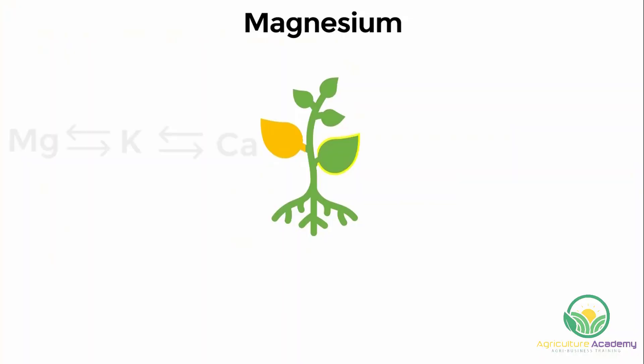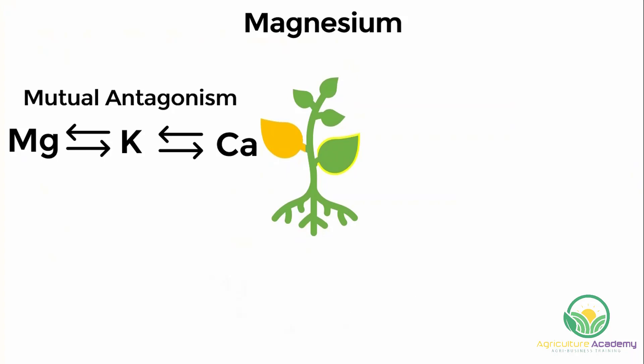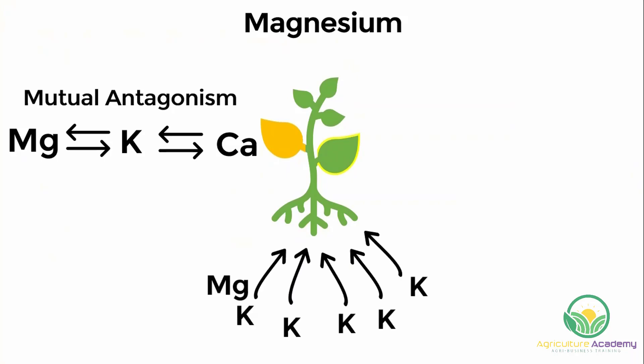In addition to this, magnesium, potassium and calcium are mutual antagonists to one another. This means that if one is present in excessive amounts, it will inhibit the plant's ability to absorb the others. Therefore, excessive fertilization of other nutrients may cause a plant to suffer from magnesium deficiency, even if it is available in the soil.